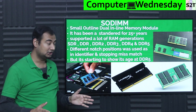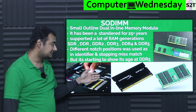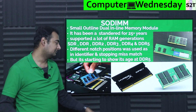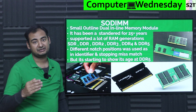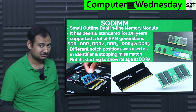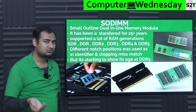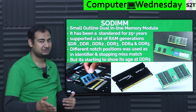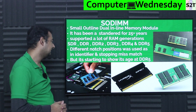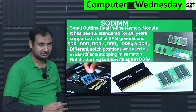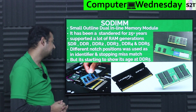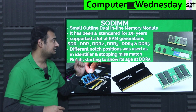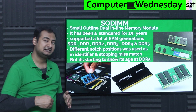SODIMM has survived a long time. It has different notch positions because the physical size is the same but the pin count is different — and sometimes even if the pin count is the same, you could fry something. So they use notches as differentiation so you do not mess it up. It started to show its age specifically with DDR5.